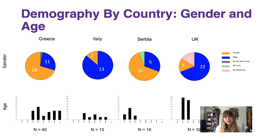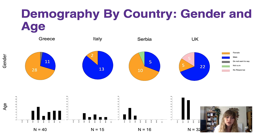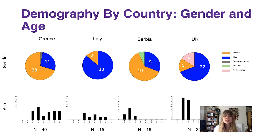From Italy, we had 15 students and 13 of these — quite by far the majority — were male and two were female. Again, we have quite broad age categories from 18 to 21 to 36 to 40, with a fairly even distribution between these categories, like in Greece.